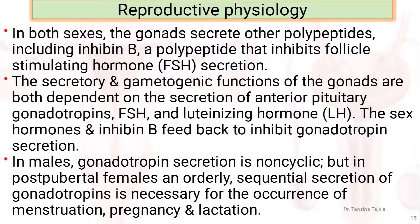In males, gonadotropin secretion is non-cyclic, but in post-pubertal females, an orderly sequential secretion of gonadotropins is necessary for the occurrence of menstruation, pregnancy, and lactation.